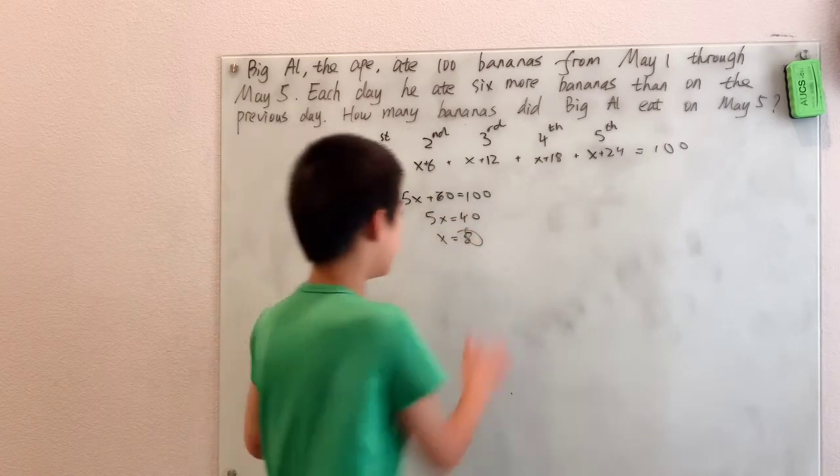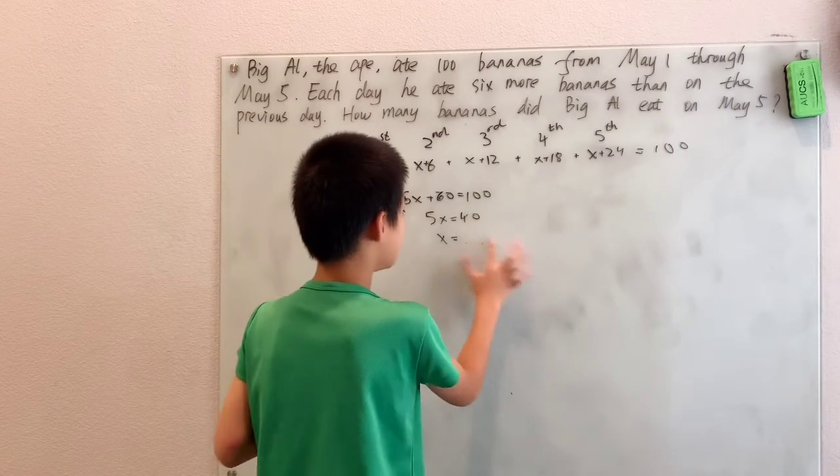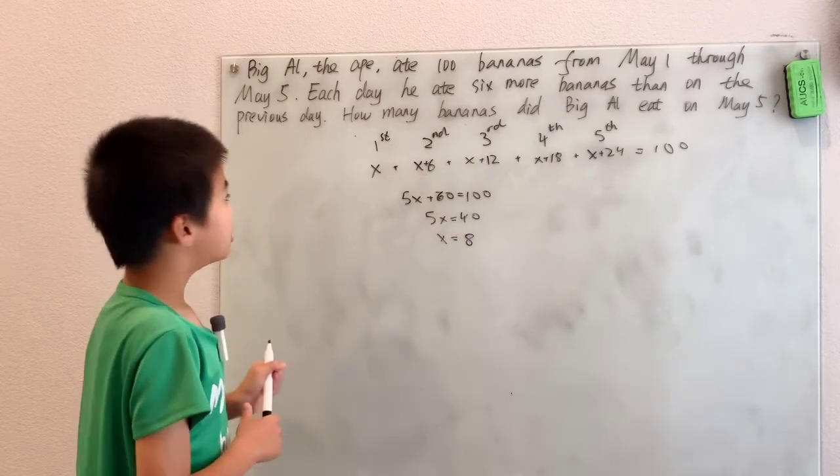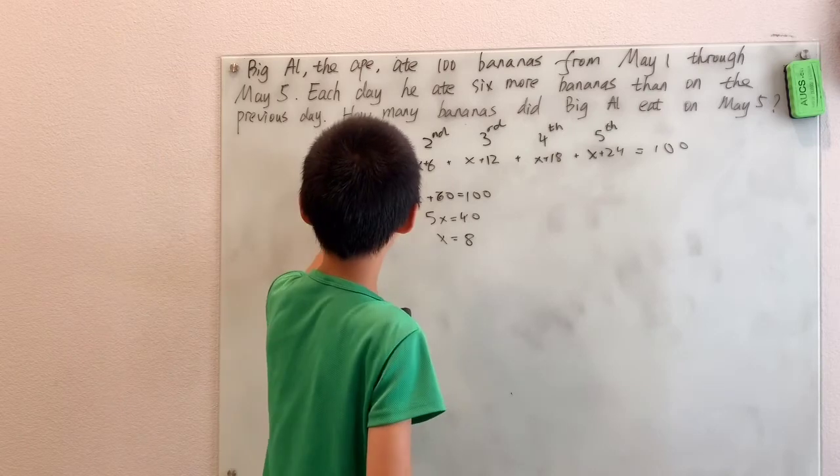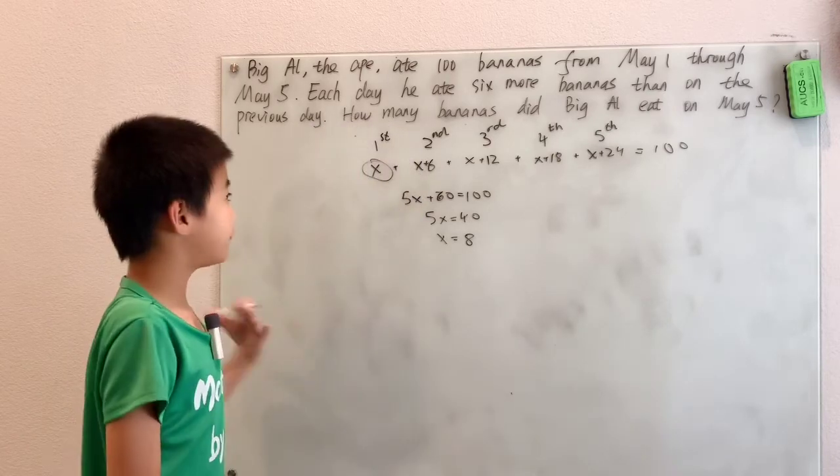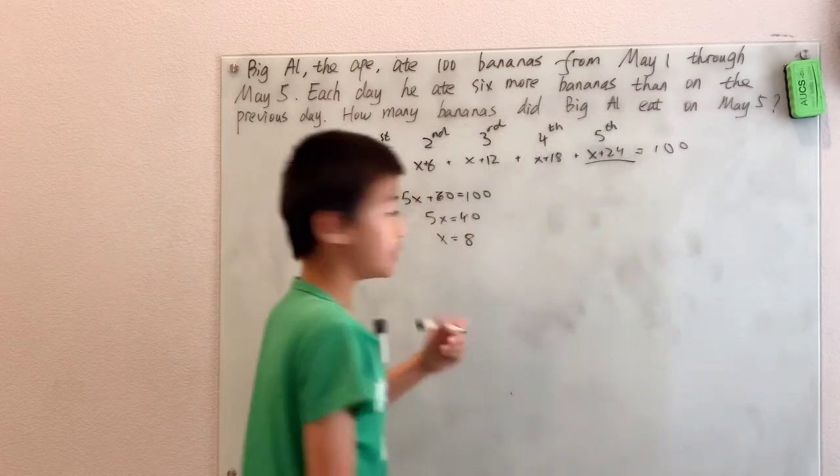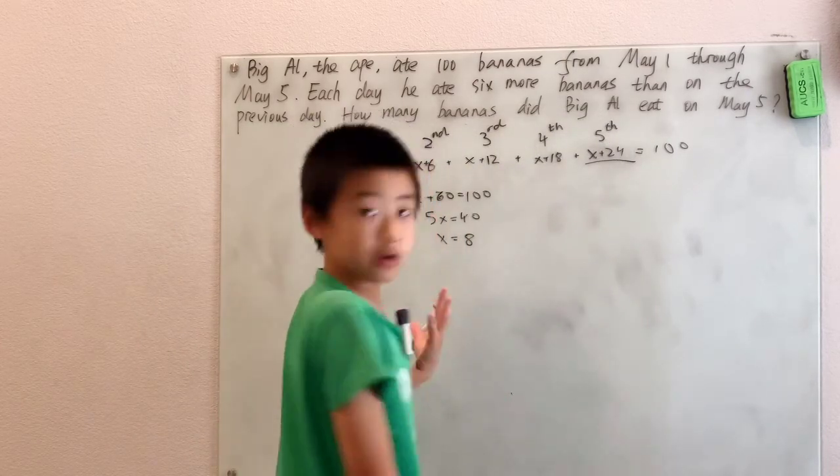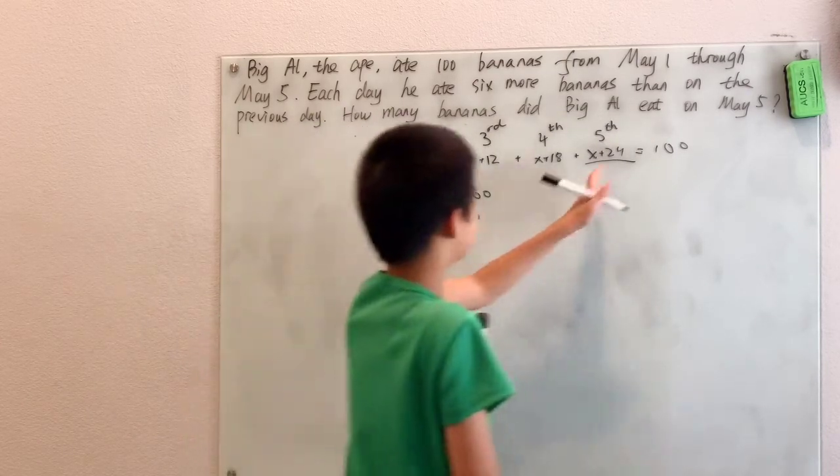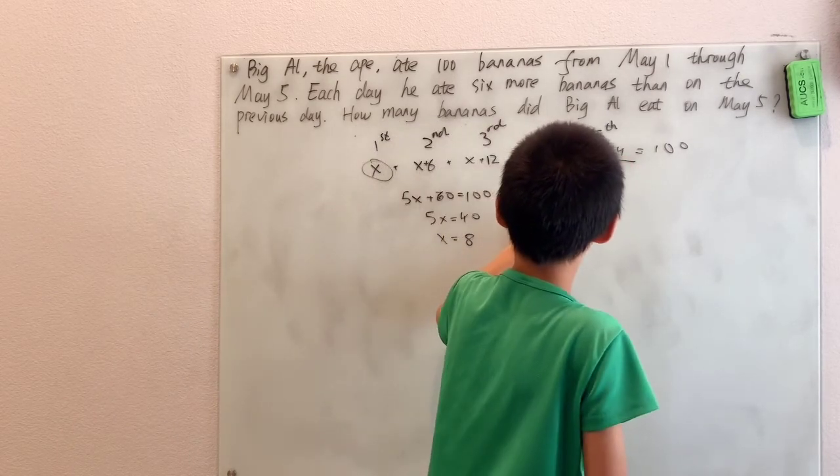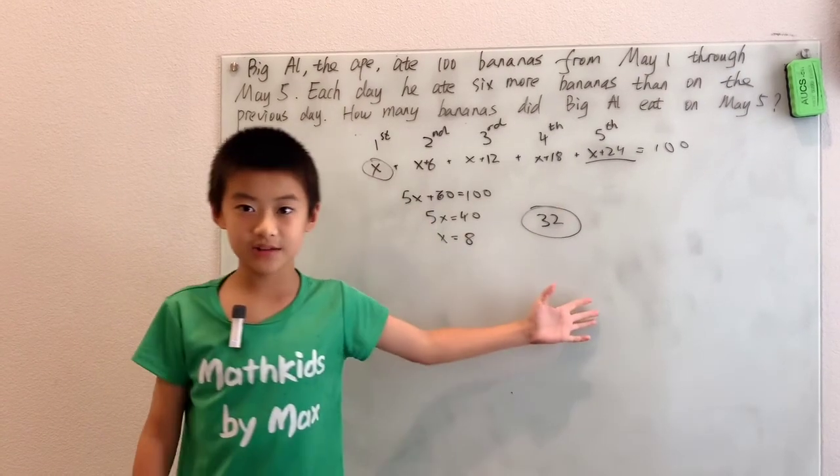Now, don't just go circle 8 and move on because they want how many bananas did Big Al eat on May 5th. Well, X is the number of bananas he ate on May 1st. So I have to go all the way to May 5th, X plus 24, to find out the correct answer. And we just have 24 plus 8, which is 32 bananas.